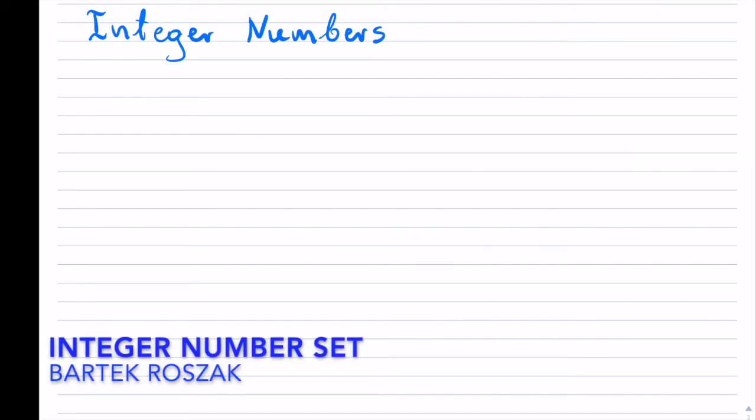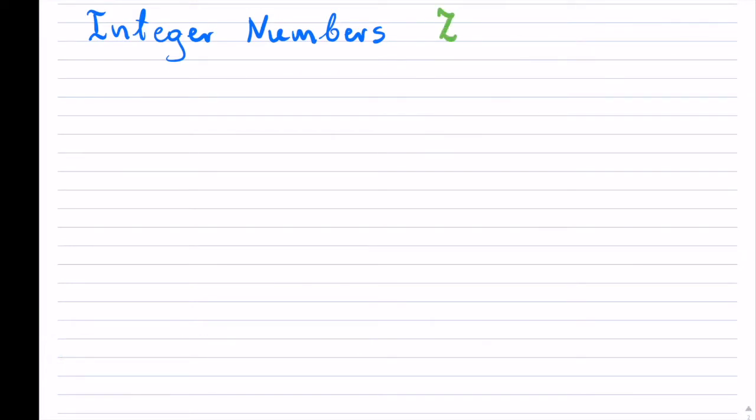Integer numbers, or the integer set. We designate this with sometimes a capital Z, or people also use sometimes a capital I. You may see both.